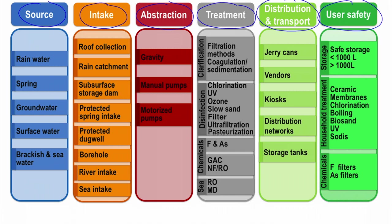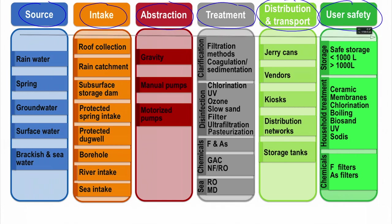It is not always necessary that water passes through all functional groups to reach the consumer. In some systems, treatment is excluded due to high quality of source water, or water is supplied by gravity and no pumping is needed. However, water always moves from left to right through the functional groups, or from top down within the group.